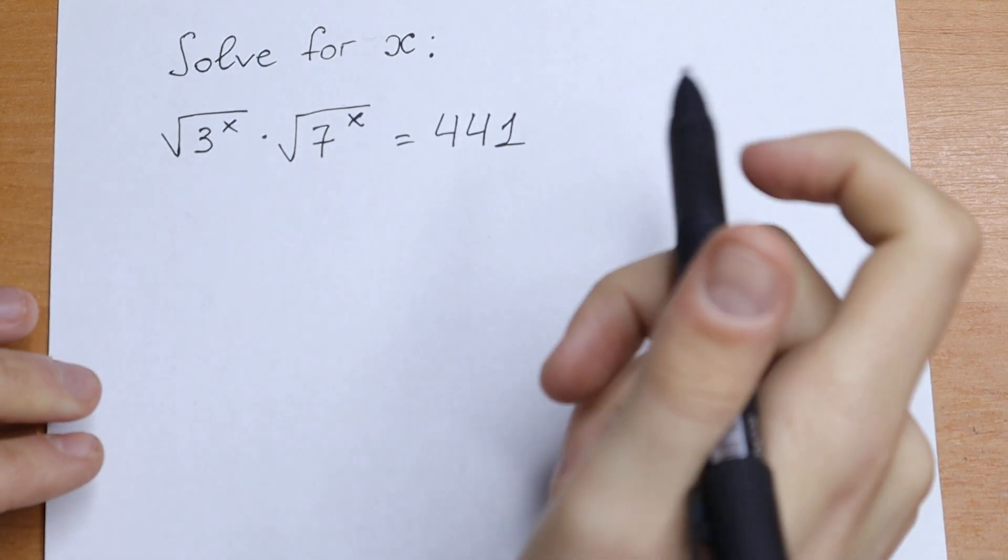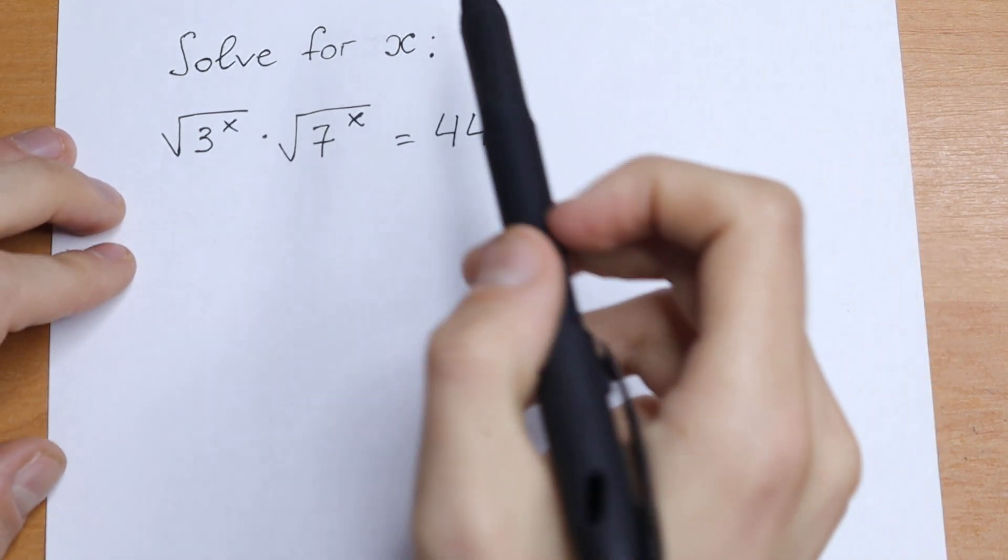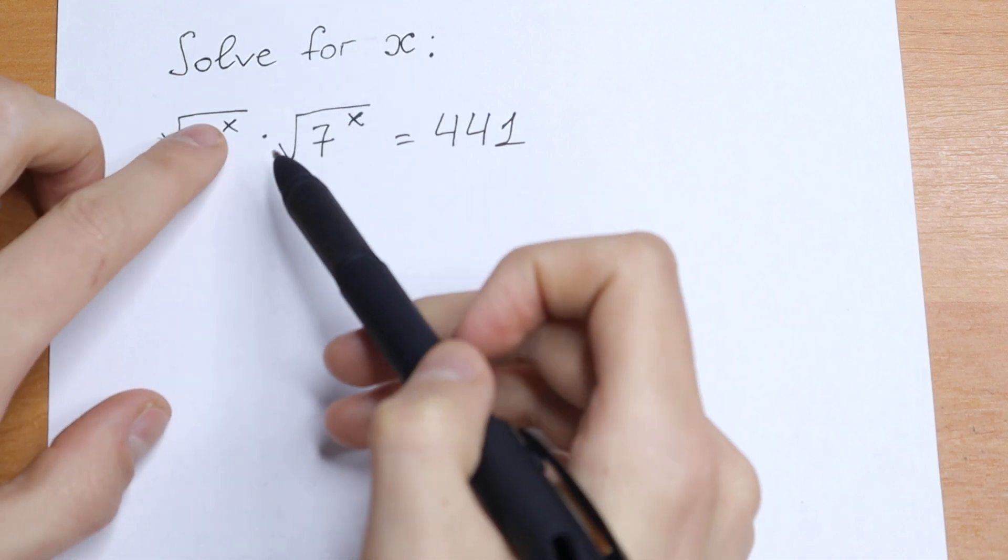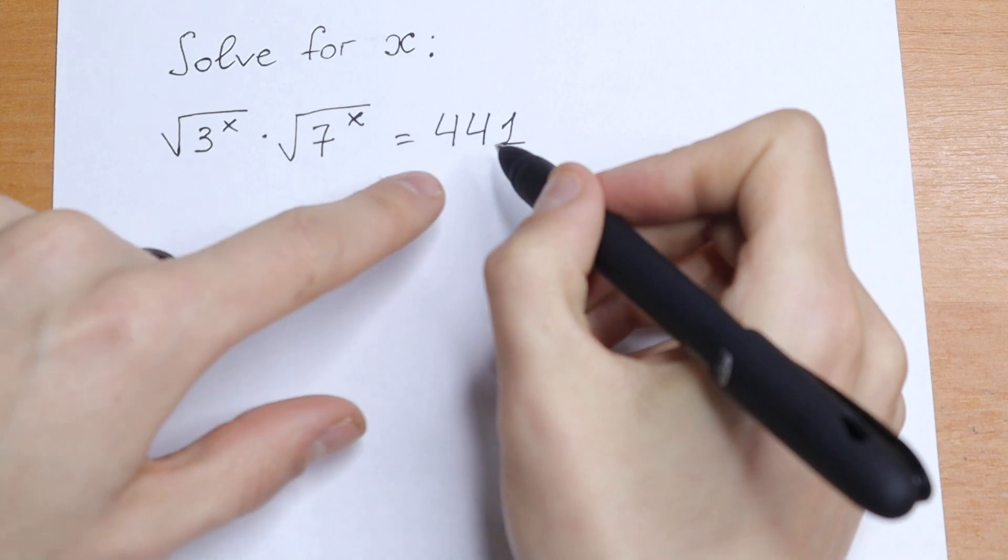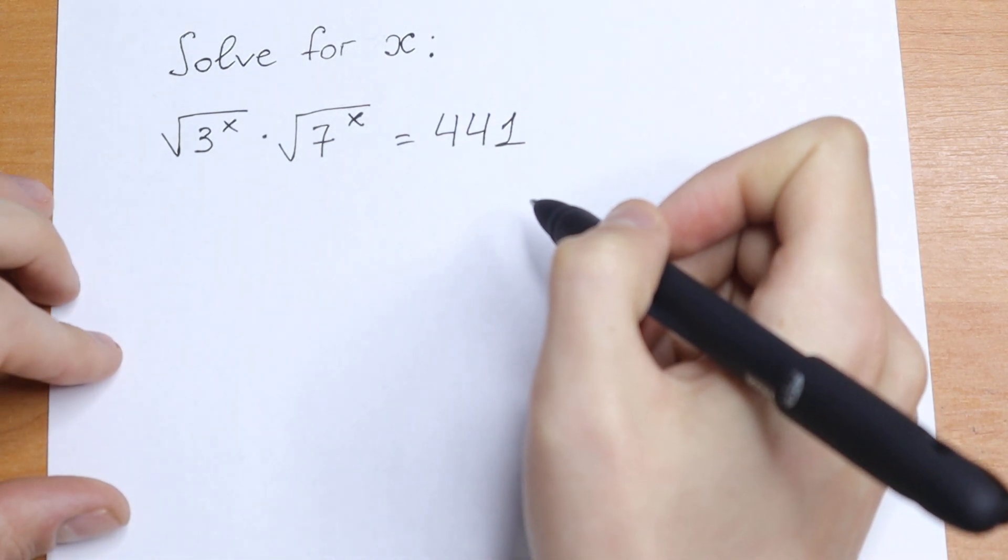Hello everyone, welcome back to MathsMoon. Today we have an interesting equation. We need to solve this equation for x. We have square root of 3 to the power x times square root of 7 to the power x equal to 441. How can we solve it?